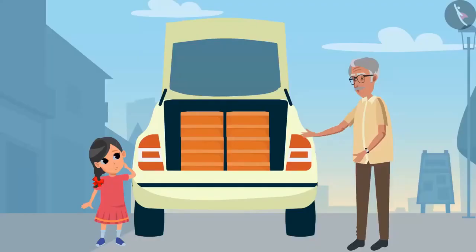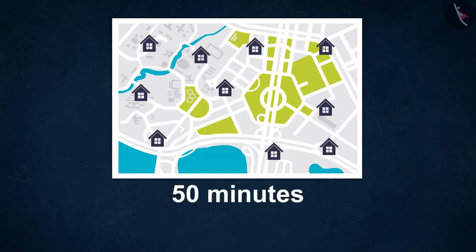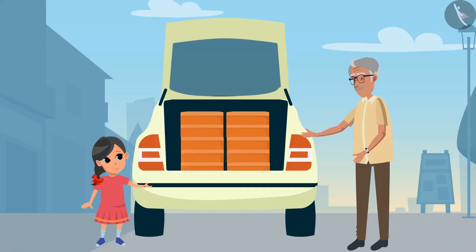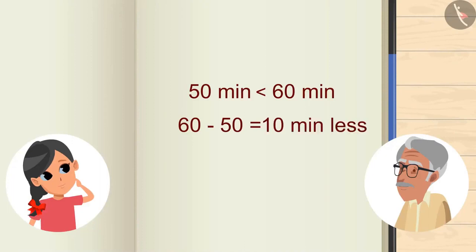Besides this, driving from one house to another will also take time. How much time, Grandpa? All the houses are very close, Goodie. If we were not carrying boxes, we would have easily covered the distance by foot. It will hardly take 50 minutes. It means nearly 1 hour. You tell me — if there are 60 minutes in an hour, then 50 minutes is how much more or less? 50 minutes is less than 60 minutes. On subtracting 50 from 60, we get 10. So it is 10 minutes less than 60, Grandpa.